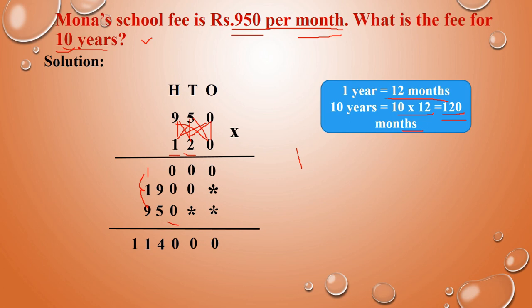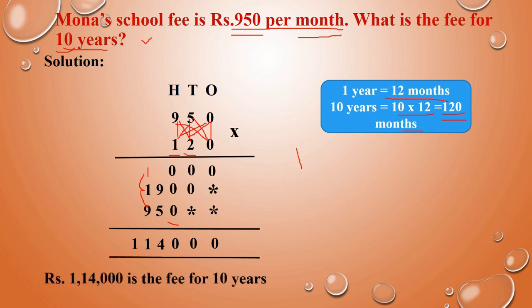Adding: 0 plus 0 is 0. Then 0 plus 0 plus 0 is 0. Next, here 9 and 5: 9 plus 5 is 14. So write 4, carry 1. Next, 1 plus 1 is 2; then 2 plus 9 is 11. So the answer is 1,14,000. Per month school fee is Rs. 950; for 10 years they are going to spend Rs. 1,14,000. So the product is Rs. 1,14,000 — that is the fee for 10 years. In this video we have seen how to multiply by a 3-digit number and a word problem. Thank you, children.